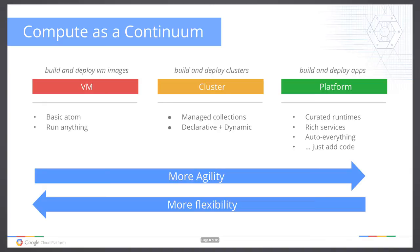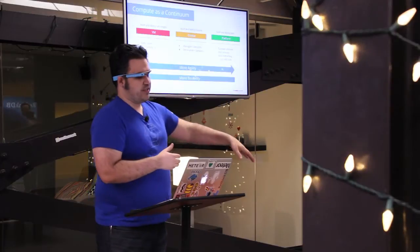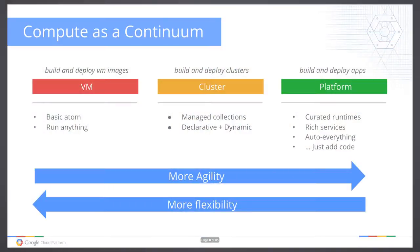You end up with a VM, which is your basic atom — it'll run anything you want. Then you have clusters you can deploy to, manage collections of code. It's declarative, dynamic, and very awesome. And then you have the platform-as-a-service stuff with curated services like App Engine: rich services, auto-everything. If you've ever done scaling on App Engine, you know it'll scale to your heart's content — you don't have to understand load balancers or round-robin DNS.